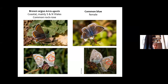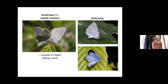The undersides of brown argus and common blue are really difficult to tell apart. The main feature is that the brown argus has a closely-paired little figure-of-eight marking that the common blue doesn't have. The small blue is a lovely little butterfly — upper wings are brown but its underside is very blue, rather like the holly blue underside, though they're in very different habitats. In Wales, small blue is coastal and only lays its eggs on kidney vetch — the larvae feed on the flowers of the kidney vetch rather than the leaves.